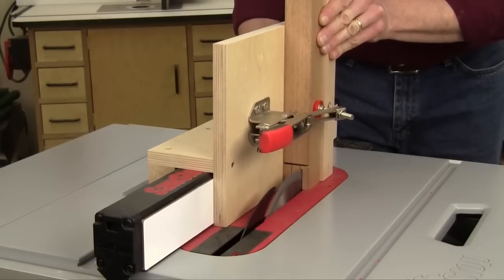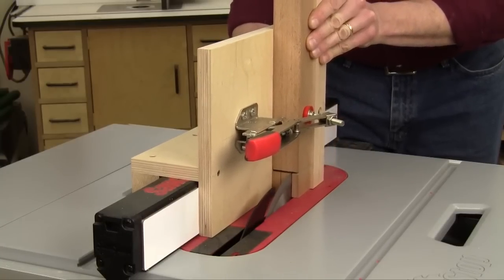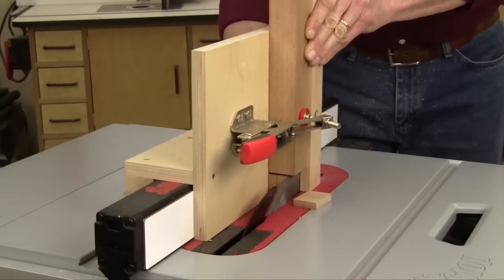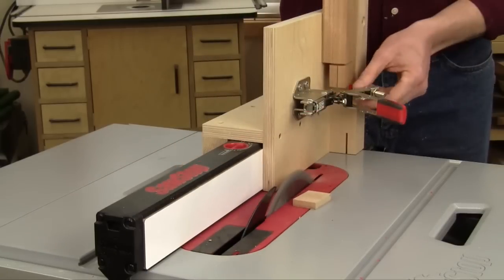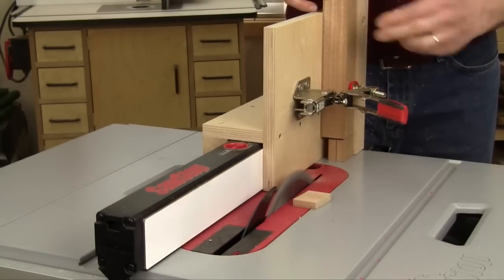Go ahead and cut the first long cheek by sliding the tenoning jig and work piece past the blade. Then pull the jig back carefully, flip the work piece and reclamp, and make the second cheek cut.